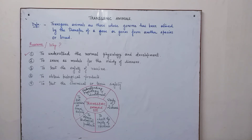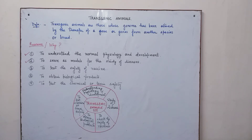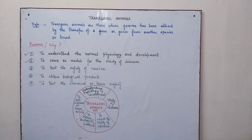Secondly, transgenic animals serve as models for the study of various diseases. They are designed to help us understand how a gene contributes to a particular trait or to the development of a disease, and to investigate new treatments for diseases in human beings. Transgenic animals are now available for studying diseases like rheumatoid arthritis, Alzheimer's disease, and cystic fibrosis.